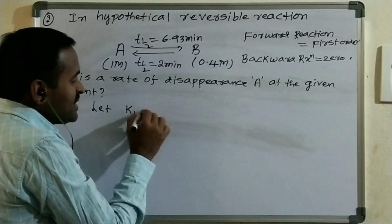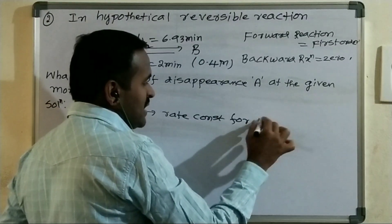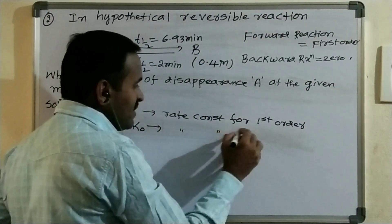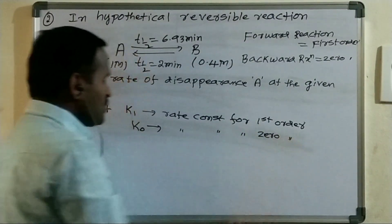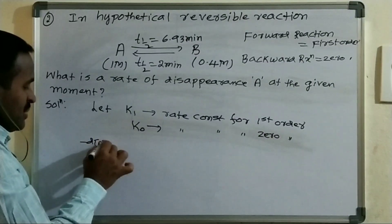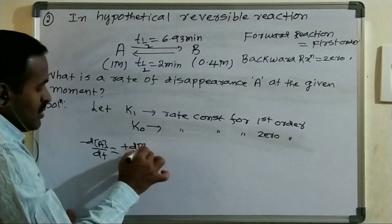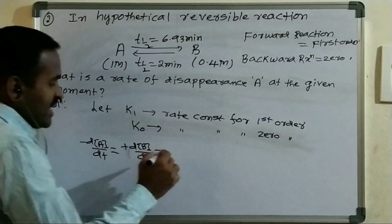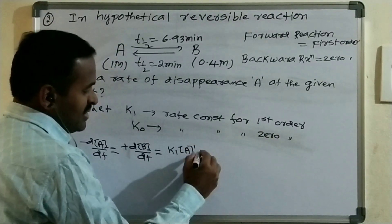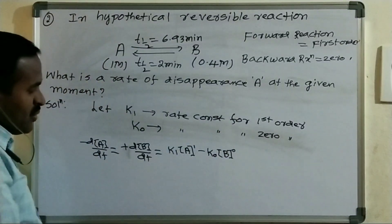Let K1 be the rate constant for the forward first-order reaction, and K0 be the rate constant for the backward zero-order reaction. We can write the rate law: minus d[A]/dt equals plus d[B]/dt, which equals K1 × [A]¹ minus K0.